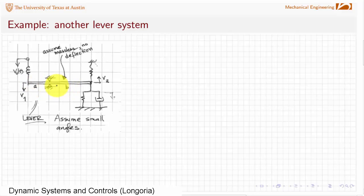And we're going to assume in this case that it's massless, no deflection. So we're not going to worry about going into rotation and getting inertia. We're going to also assume that there's very little friction here. So why do we want to do that? Well, that means that we can model this as a real simple lever.